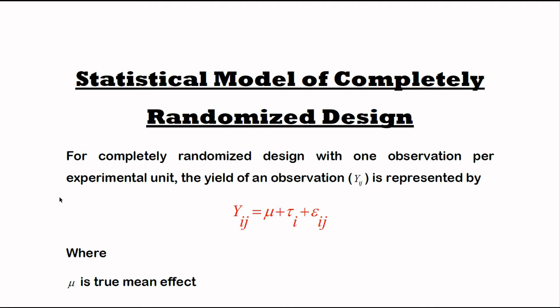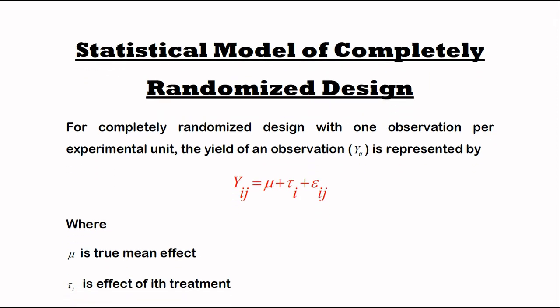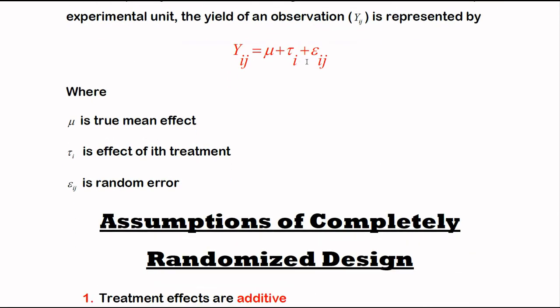represented in mathematical form as Y_ij equals mu, which is the mean effect, plus tau_i, which represents the treatment assigned to the experimental unit, plus epsilon_ij, which is the random error. This is the mathematical